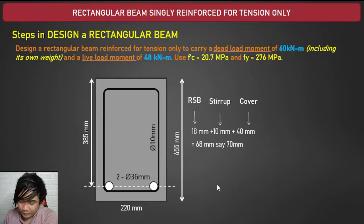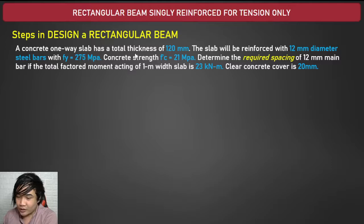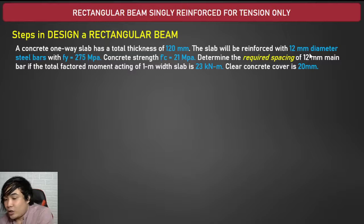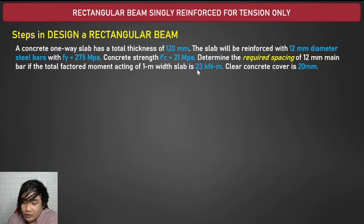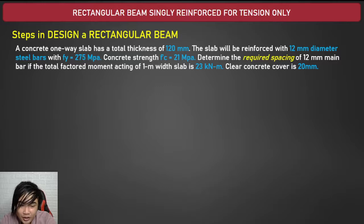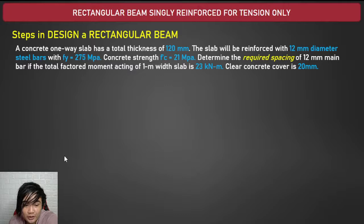Let's move to another example: a concrete one-way slab with total thickness of 120 mm, reinforced with 12 mm diameter bars with fy = 275 MPa and f'c = 21 MPa. Determine the required spacing of 12 mm main bars if the total factored moment per 1-meter width of slab is 23 kNm. Clear cover is 20 mm. Slabs can also be designed as singly reinforced — treated as a wider beam. Footings are also designed as singly reinforced.